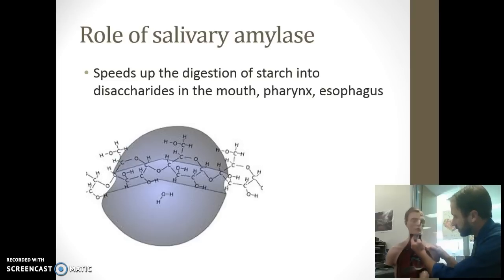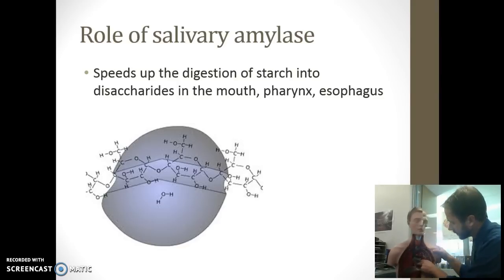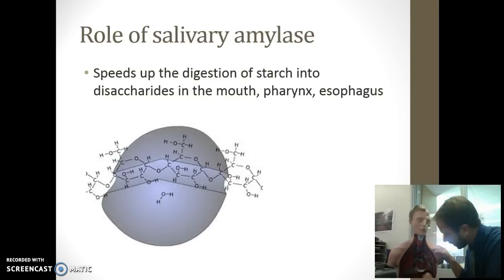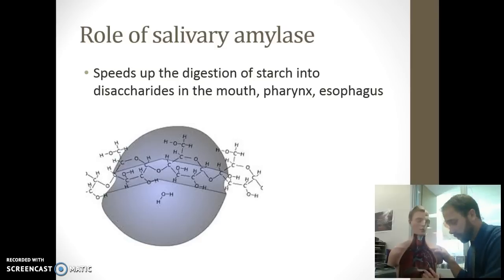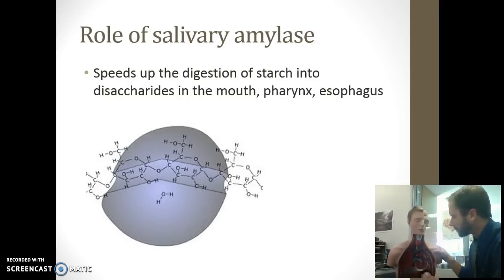Food goes in the mouth, then down the pharynx, and into the esophagus, running all the way down into the stomach. Salivary amylase digestion occurs from the mouth through the esophagus, but once food reaches the stomach, it no longer happens — it's shut down. Enzymes work at specific pHs and temperatures, and the stomach has a much lower pH. That shuts down amylase, but other enzymes in the stomach continue to break down the pizza.